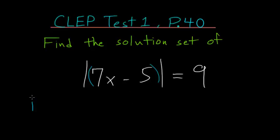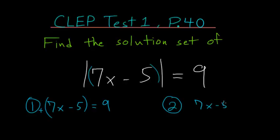So let's write each of those cases down. We have 7x minus 5, the positive version, is equal to 9. And the second case, 7x minus 5 evaluates to a negative number and then the absolute value bars flip it. This is also equal to 9.